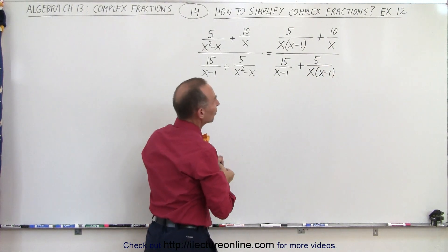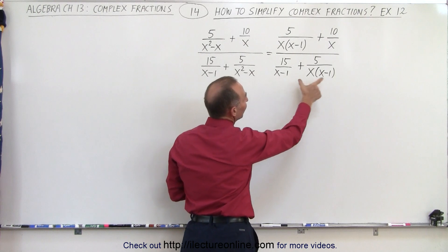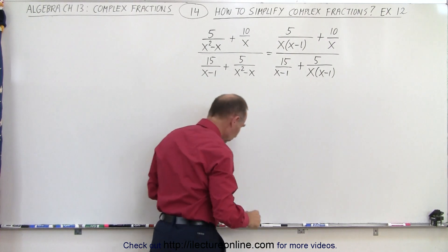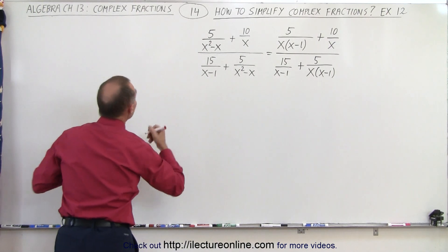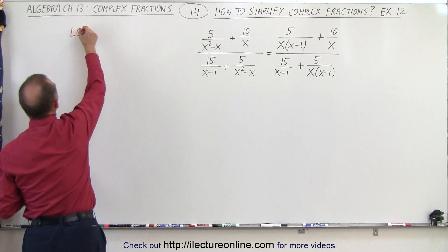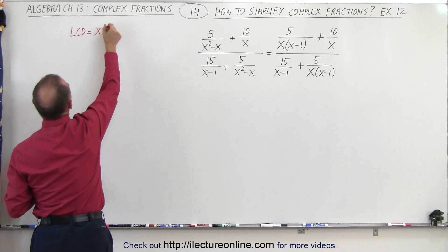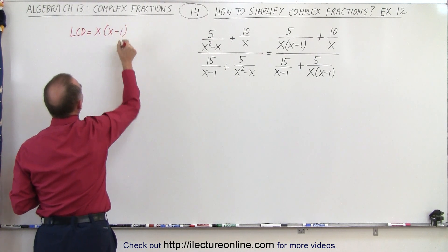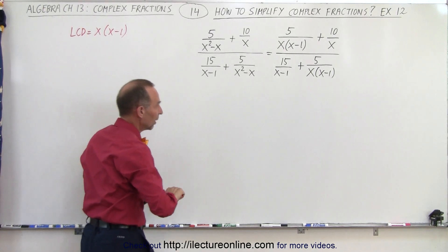And so clearly you can see that x minus 1 fits into the product of x times x minus 1, which means that the LCD in this case is equal to x times x minus 1, the largest of the two denominators.